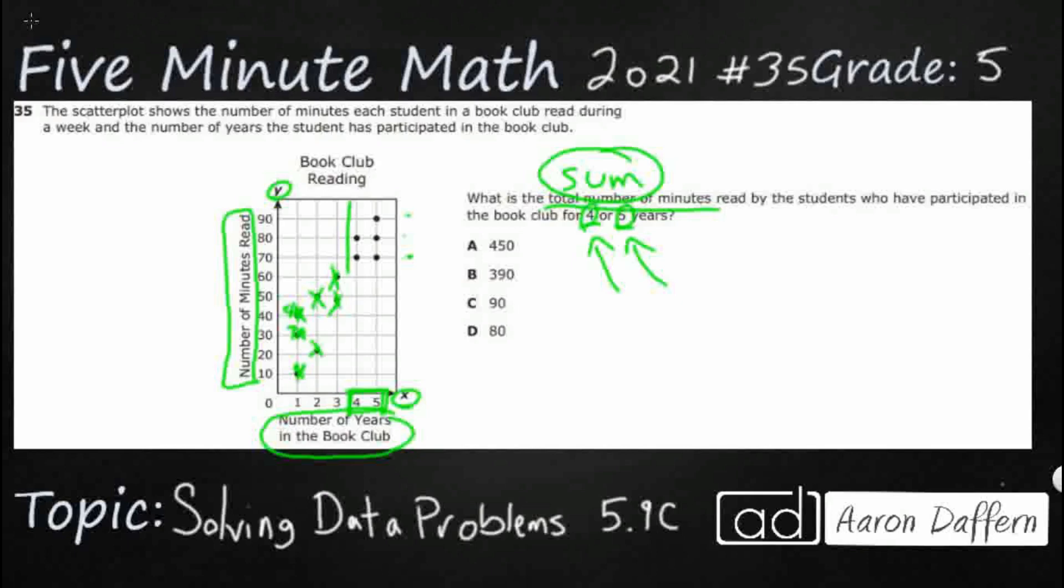We're looking for these 5 points. And that's all we need to do. Once we know that we've got 4 or 5 years, because that matches up with our x-axis of number of years in the club, then all we're going to do is we're just going to pull this off, find the corresponding values on our y-axis, which is the number of minutes read, and then we will add them up, and we will have our answer.